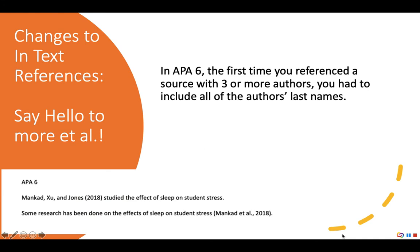You can see this in the example of APA 6. In my first citation to the source — Mon, Cod, Shu, and Jones, 2018 — studied the effect of sleep on student stress. I had to list all of the authors' last names. After that, in my second sentence, I could use the et al. version: 'Some research has been done on the effects of sleep on student stress (Mon-Cod et al., 2018).'